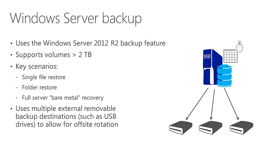To do a bare metal recovery, you boot from the Installation Media and instead of choosing Install, you choose Repair, which kicks off the Windows pre-installation environment. You can then restore your server from your backup destination media, typically a removable external hard drive. It's definitely recommended to use multiple USB drives or external removable devices and rotate those off-site — as simple as having someone take one home each day or week, or renting a safety deposit box.